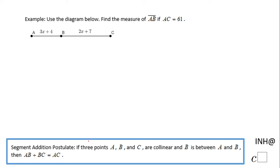Welcome, or welcome back, to C Squared. In this example we're going to need to find the measure of segment AB if AC is 61. Here is the picture, and what do you notice? We have three points: A, B, and C.